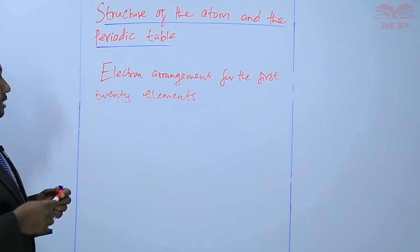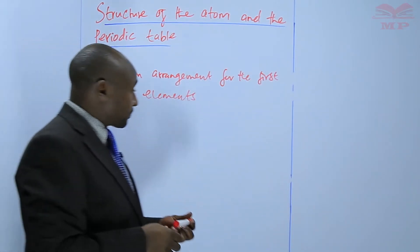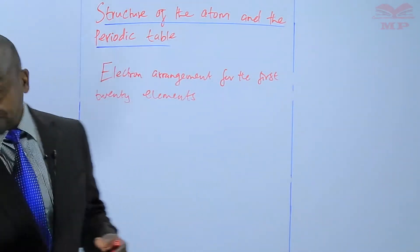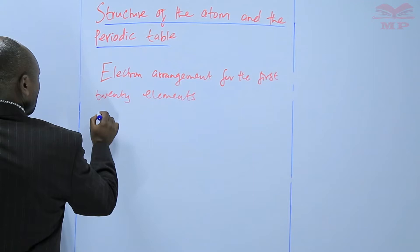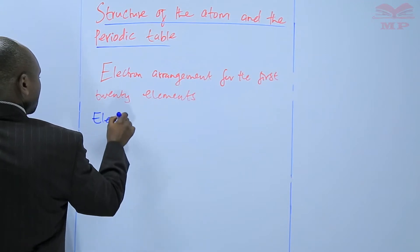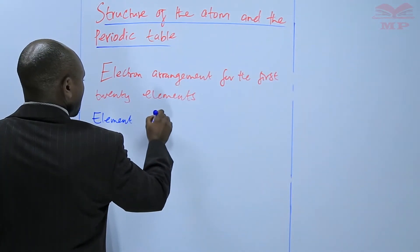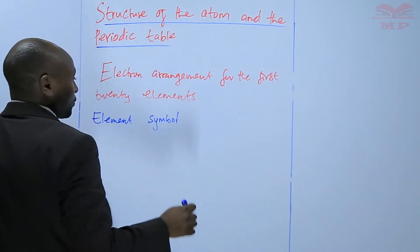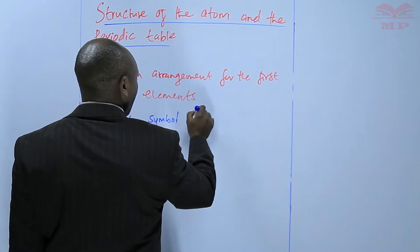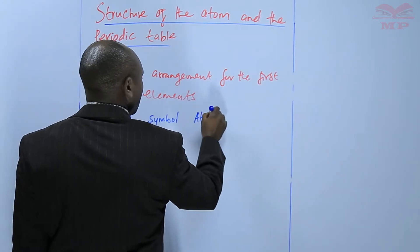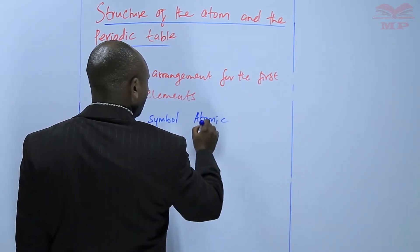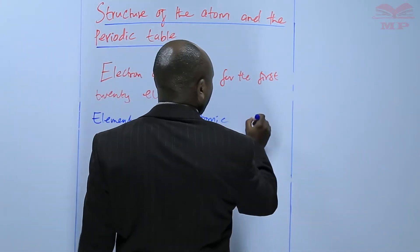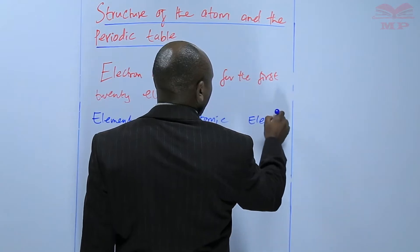So the electron arrangement for the first 20 elements, we shall present it as a table whereby we shall have the element, its symbol, the atomic number, and finally the electron arrangement.